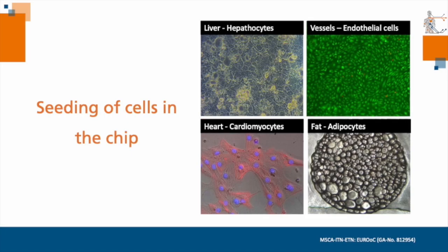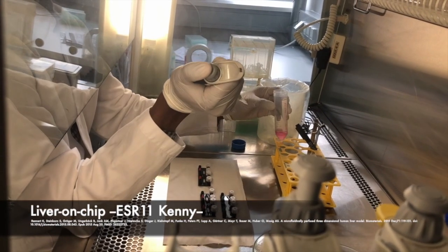Now that the chips are fabricated and sterilized, it's time to add the cells to them. Cells can be obtained from immortalized cell lines, directly from the patients as primary tissue or from induced pluripotent stem cells. These cells could be frozen or isolated fresh from tissue obtained from the hospital.